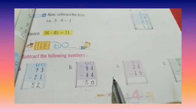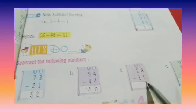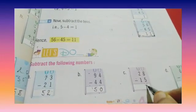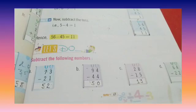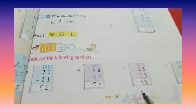Now part C, 28 minus 15. So 8 minus 5. 6, 7, 8. So 8 minus 5 is 3. Now 2 minus 1 is 1. So the answer is 13. 28 minus 15 is 13.